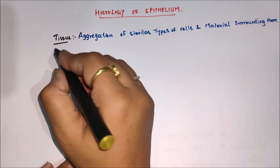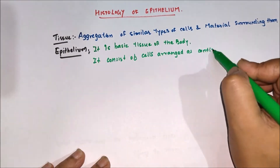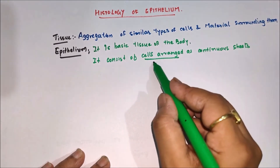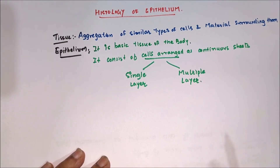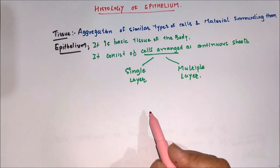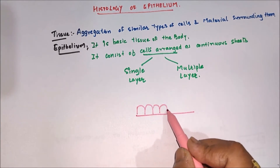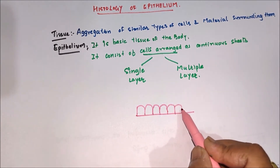So what is epithelium? Epithelium is a basic tissue of our body and it consists of cells which are arranged as a continuous sheet. In this epithelium, the arrangement of the cells may be in a single layer or in multiple layers. Let us take an example.